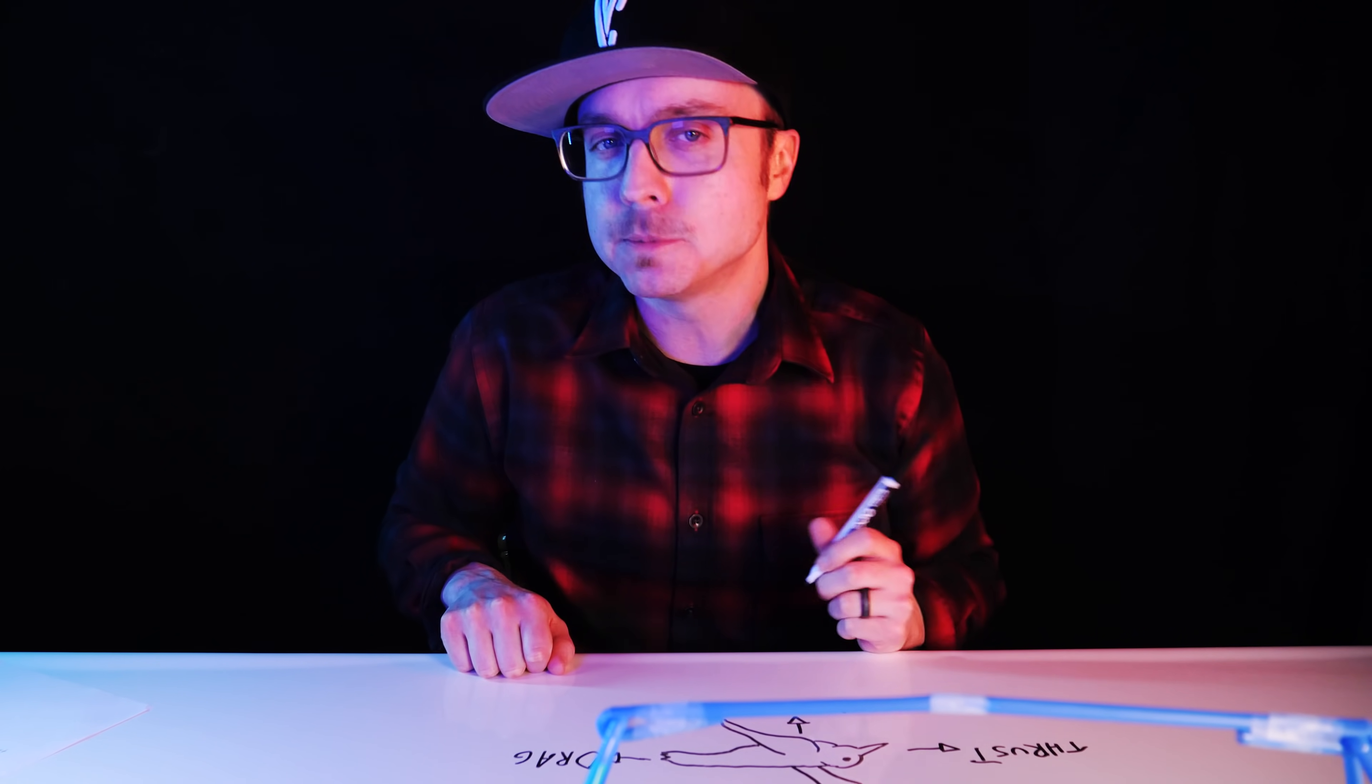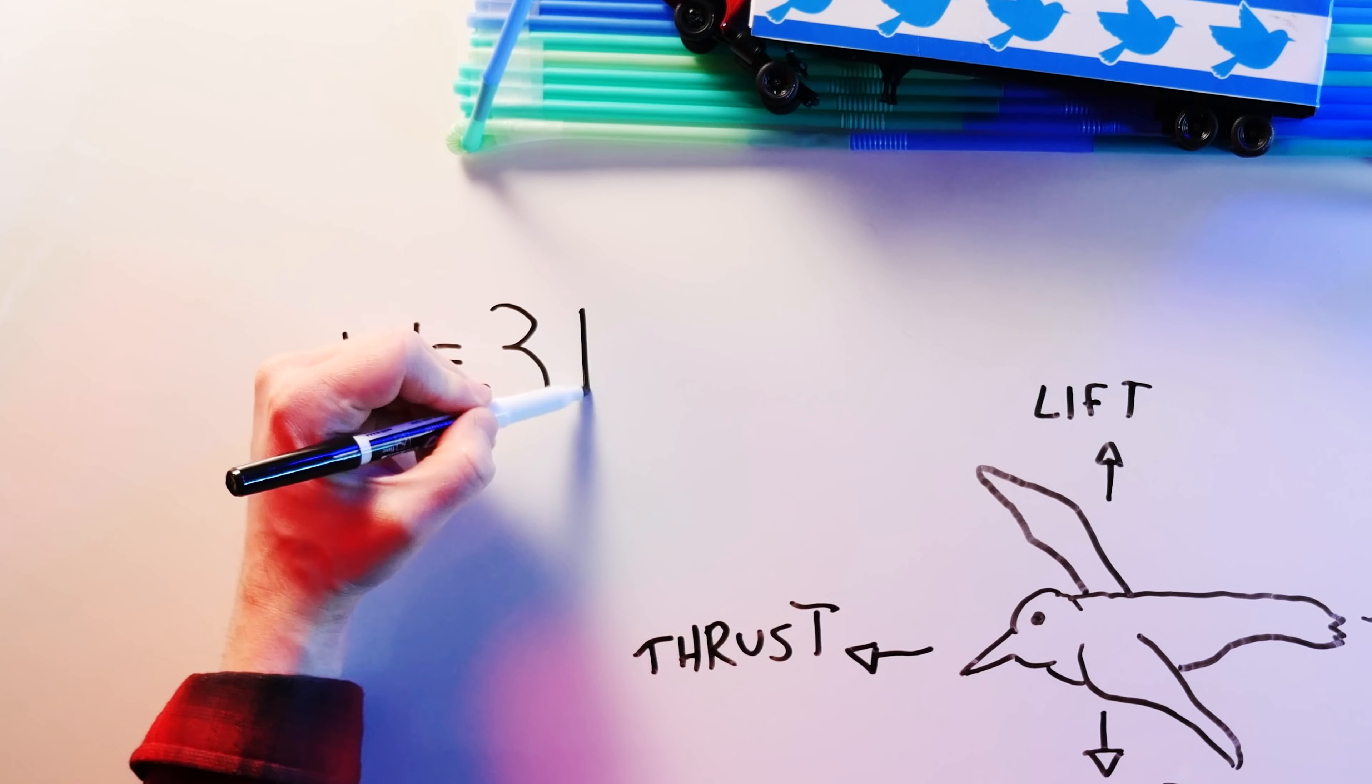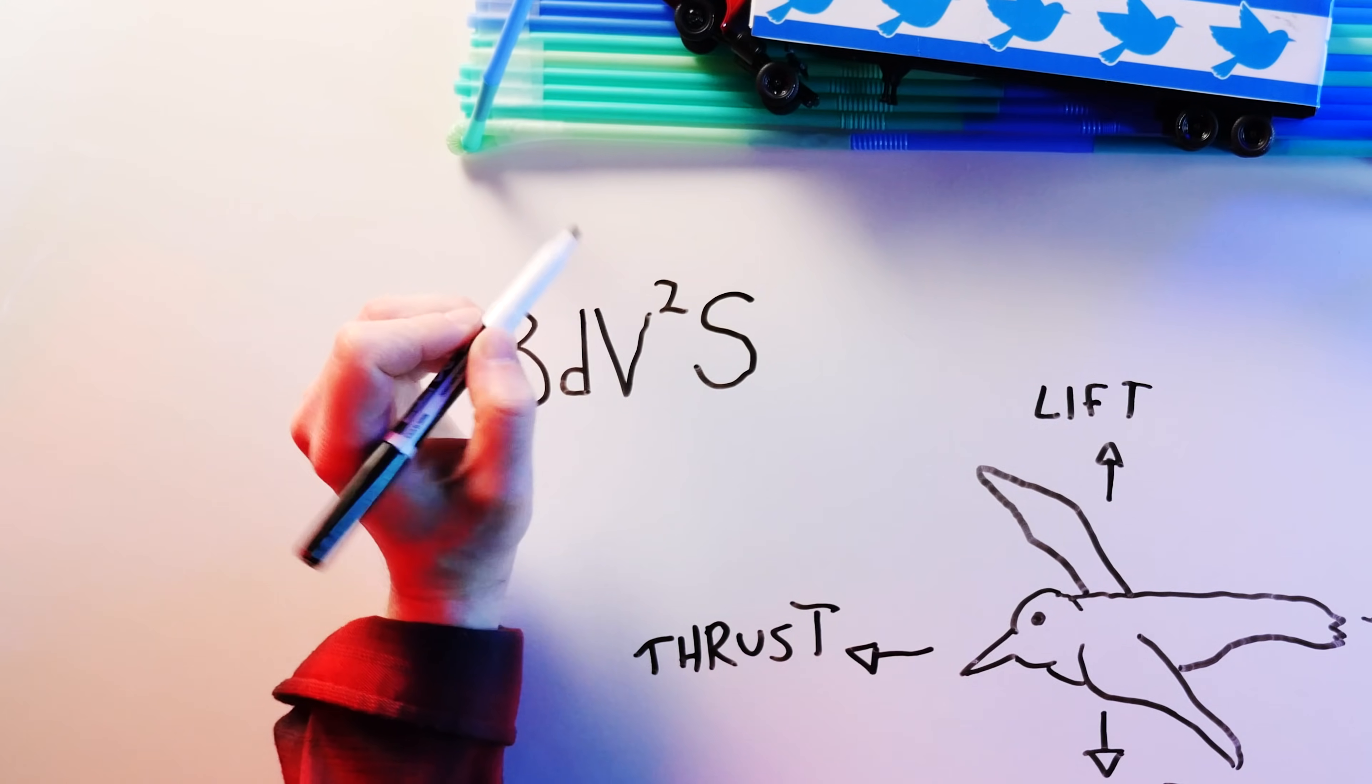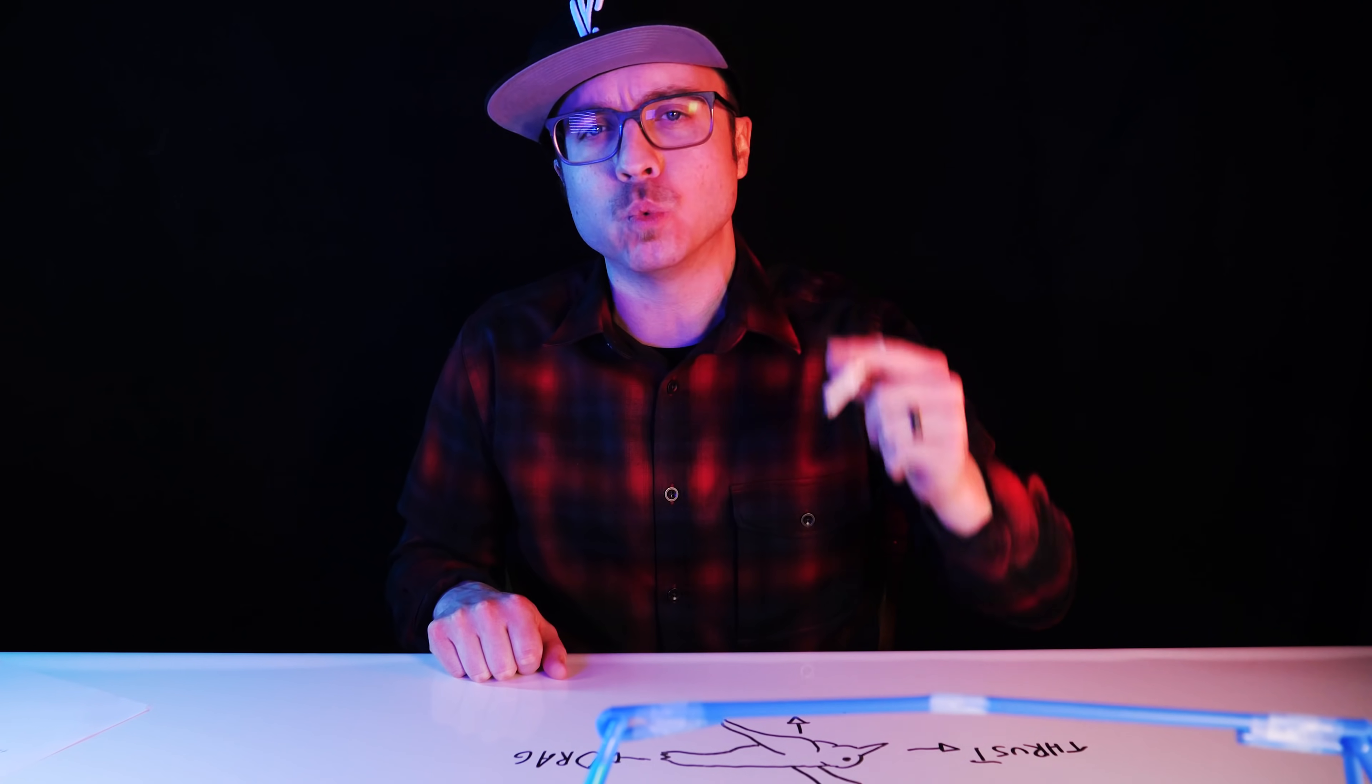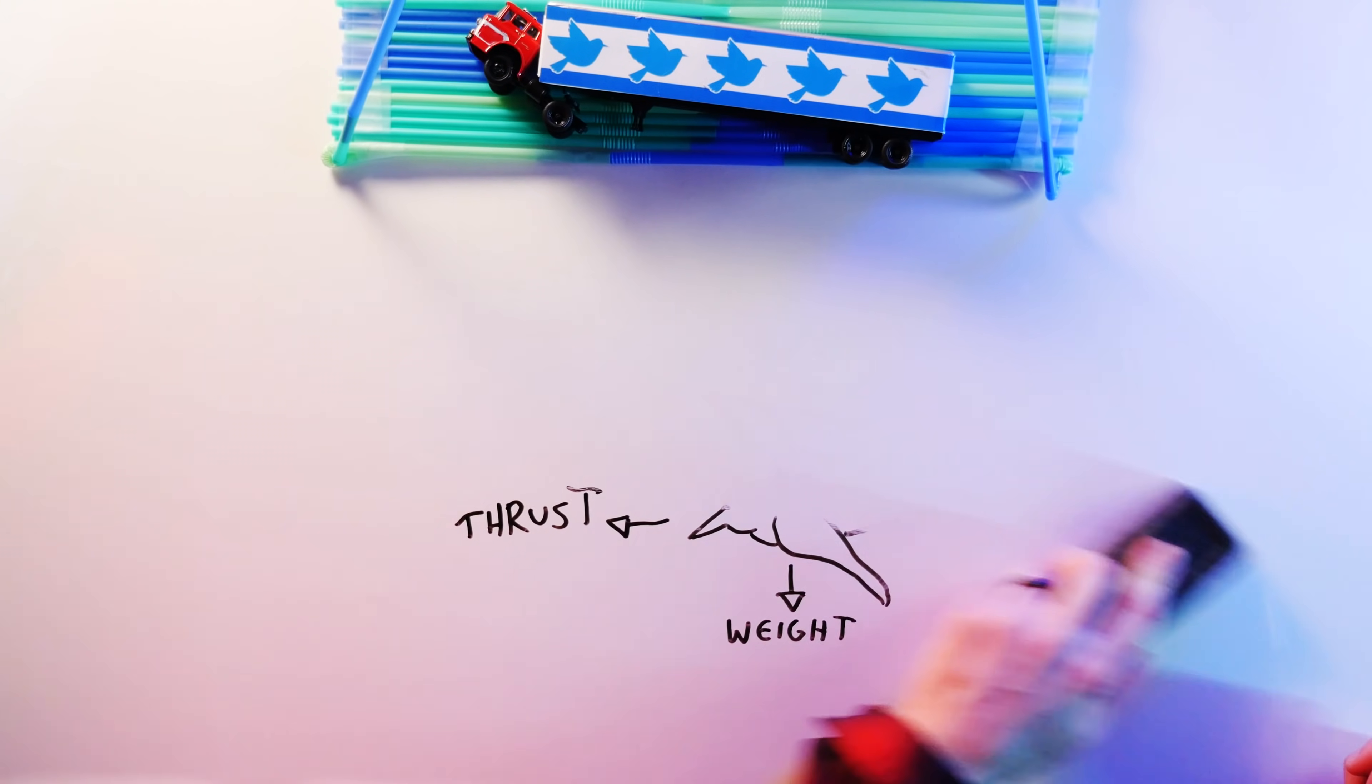multiplied by the airspeed V times the mass flow of air, which is airspeed V times air density D multiplied by S, which is the surface area of their wing and... you know what, look.